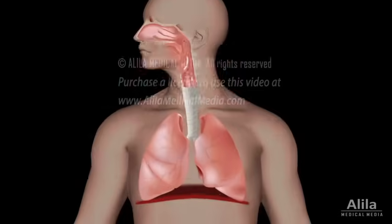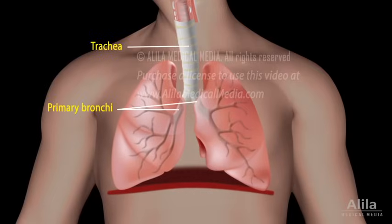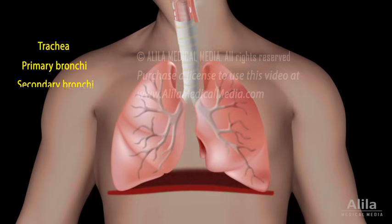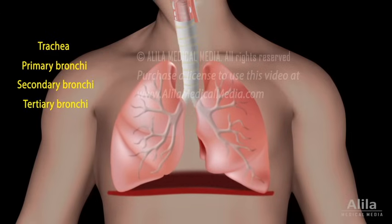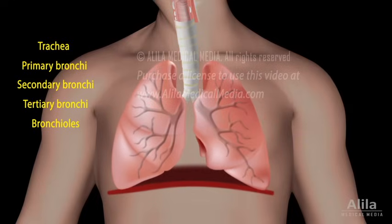From the larynx, air passes to the trachea — the windpipe — which then splits into two primary bronchi supplying the two lungs. In the lungs, primary bronchi branch into smaller and smaller bronchi and bronchioles, forming the bronchial tree with millions of air tubes or airways.